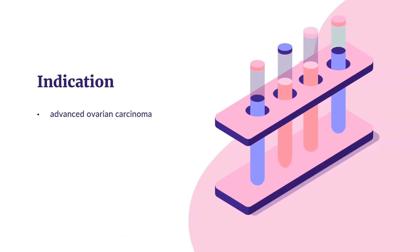What is carboplatin used for? Carboplatin is indicated in combination with an established combination of chemotherapeutic agents for the initial treatment of advanced ovarian carcinoma. Carboplatin is also indicated for the palliative treatment of ovarian carcinoma recurrent after prior chemotherapy.